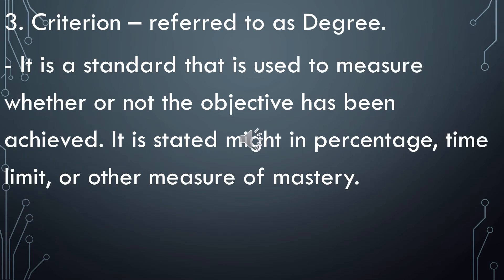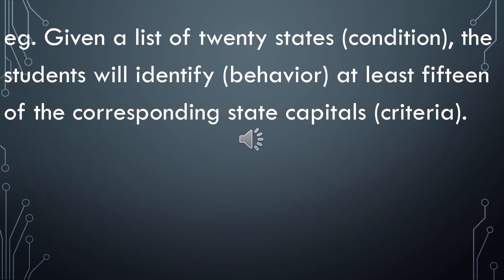Number three is the criterion, also referred to as degree. It is the standard used to measure whether or not the objective has been achieved, stated as a percentage, time limit, or other measure of mastery. For example: 'Given a list of 20 states' — that is the condition; 'the student will identify' — that is the behavior; 'at least 15 of the corresponding state capitals' — that is the criterion. After objectives are written with these specifics, it becomes easy to create a corresponding assessment item.